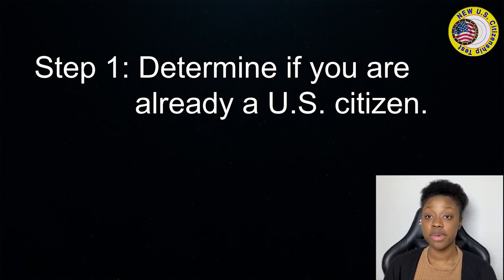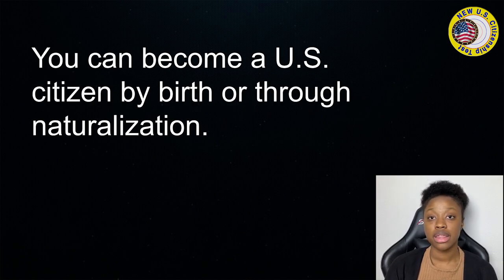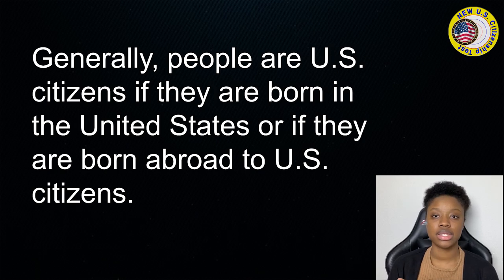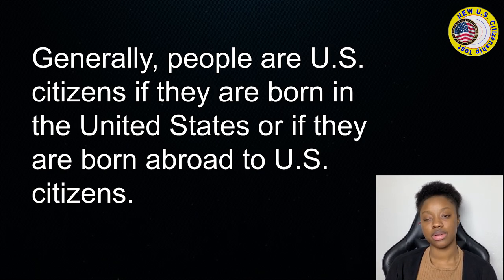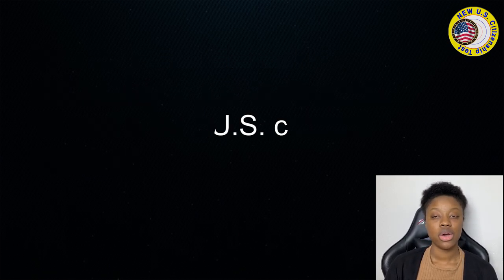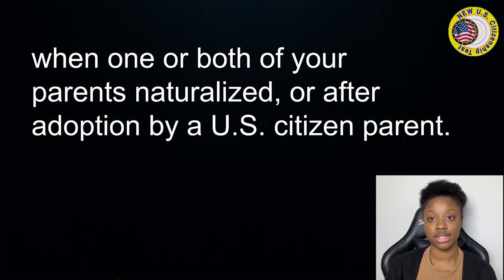Step 1: Determine if you are already a U.S. citizen. You can become a U.S. citizen by birth or through naturalization. Generally, people are U.S. citizens if they are born in the United States or if they are born abroad to U.S. citizens. You may also derive U.S. citizenship if you are under 18 and a lawful permanent resident when one or both of your parents naturalized, or after adoption by a U.S. citizen parent.